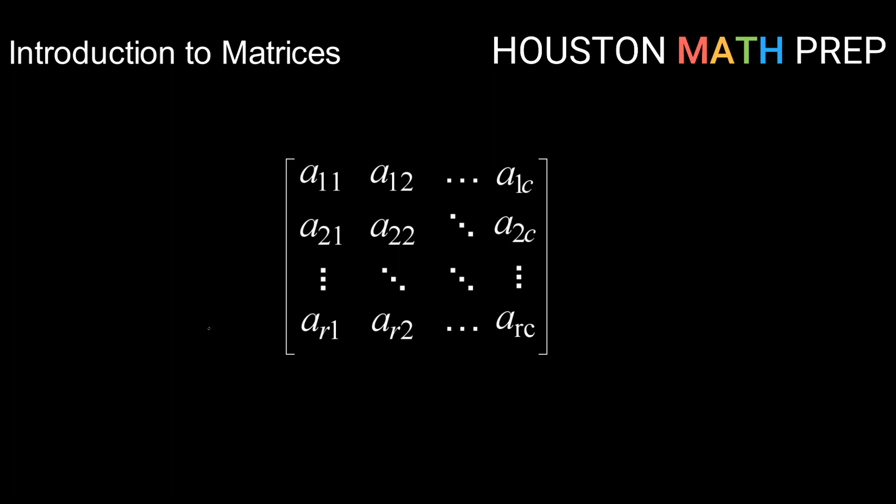Let's start with, what is a matrix? A matrix is a way of organizing information. It is a rectangular array built with rows and columns that houses information for us.